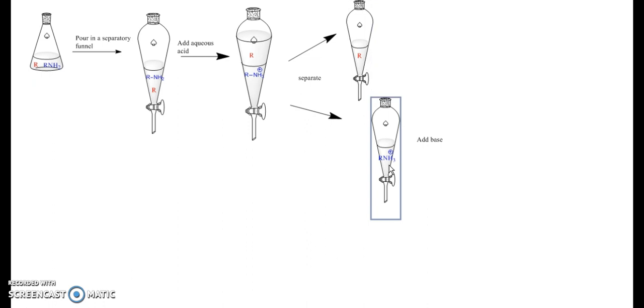And what we're going to do is to the protonated compound is we're going to add base to remove the acid that we added to it. When we do that, we get back our original unprotonated amine separated from our neutral compound.